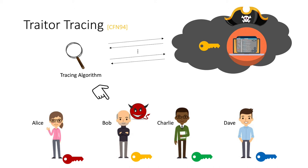What makes constructing a traitor tracing scheme highly non-trivial is how we model the leakage of the key. We model the malicious member leaking their key as creating a decoder box — essentially some decryption software with the malicious member's decryption key embedded inside it. This software can be in any form and can be highly obfuscated. So we need to design a tracing algorithm that interacts with this decoder box only in a black-box way and then identifies the traitor.